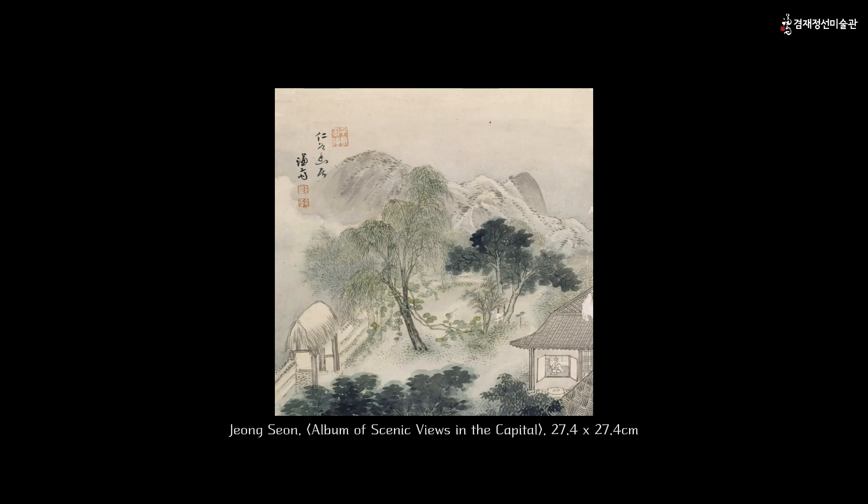Ingok-yugodo, in the lower volume of the Album of Scenic Views in the Capital, means staying deep in the valley of Inwangsan Mountain. It depicts Jong-sun's own residence in his later years. This type of painting is called Jha-hwagyong, meaning painting the scenery of one's own house. Unlike his other True-View landscape paintings, Jong-sun used soft, gentle brushstrokes and light colors to express the peaceful charm of his home.